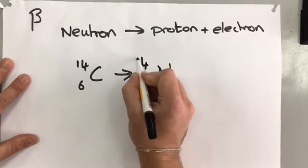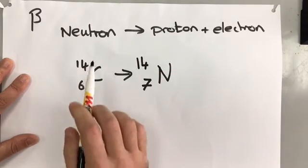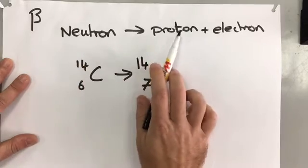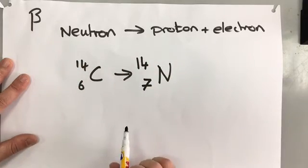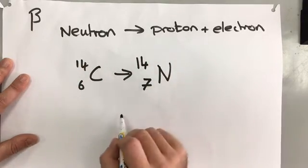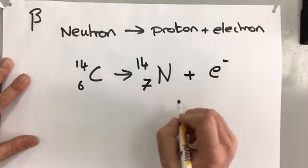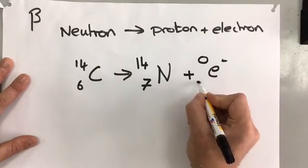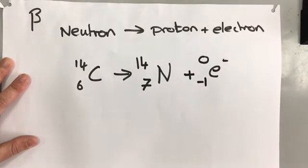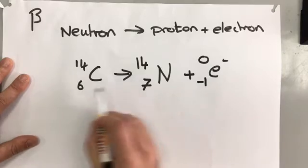The mass number is going to stay the same, because you are converting a neutron into a proton, so the mass stays the same. The only number to change is your proton number, and then we can say that you emit an electron of zero mass, and we say that it has a minus one proton number to account for this difference.